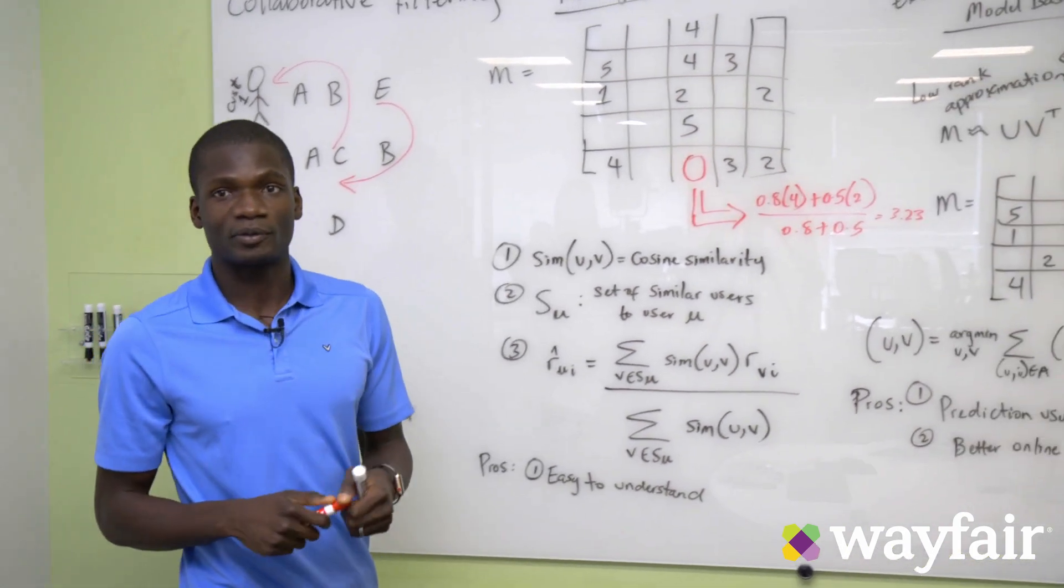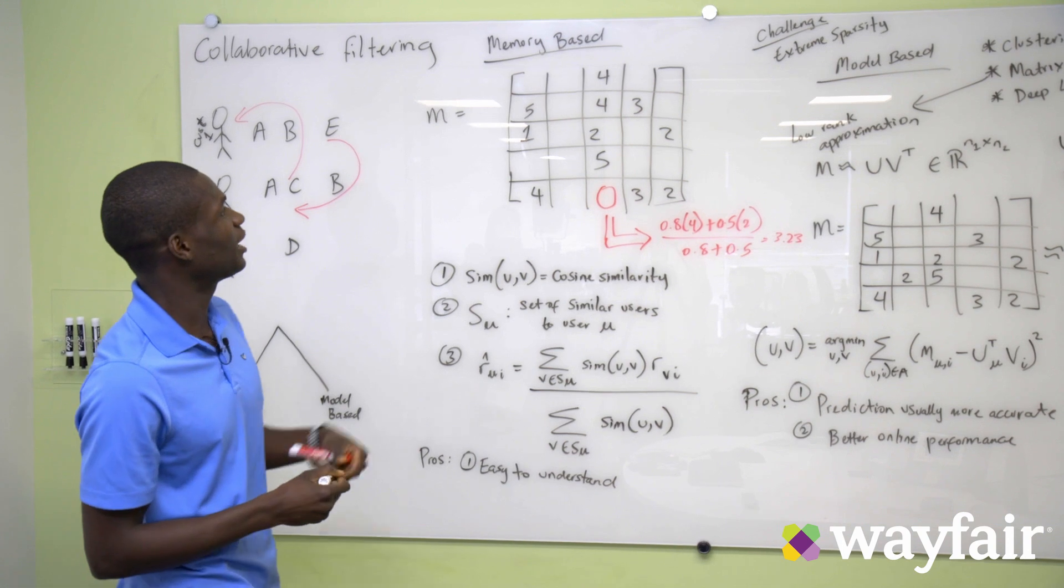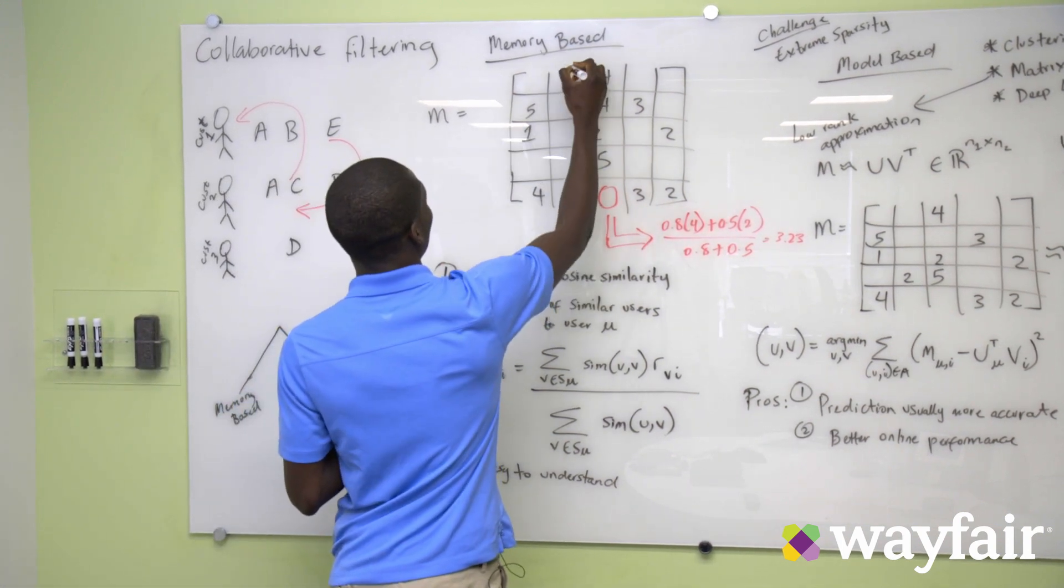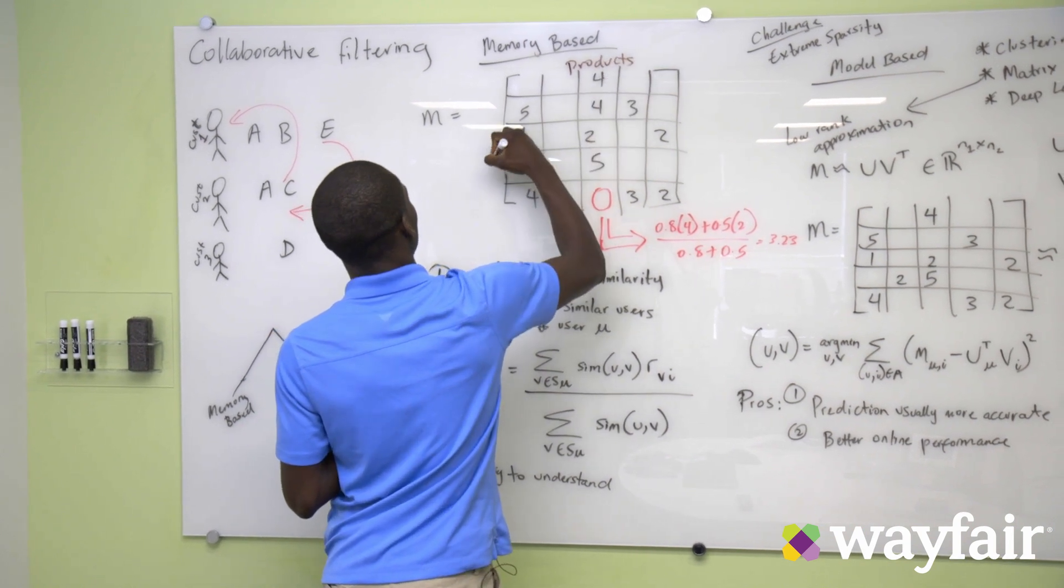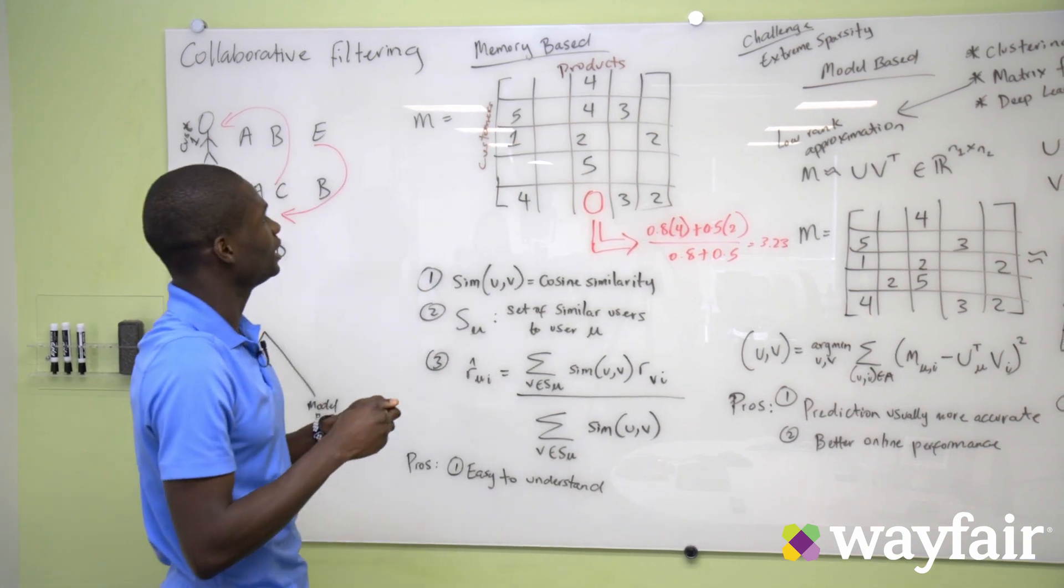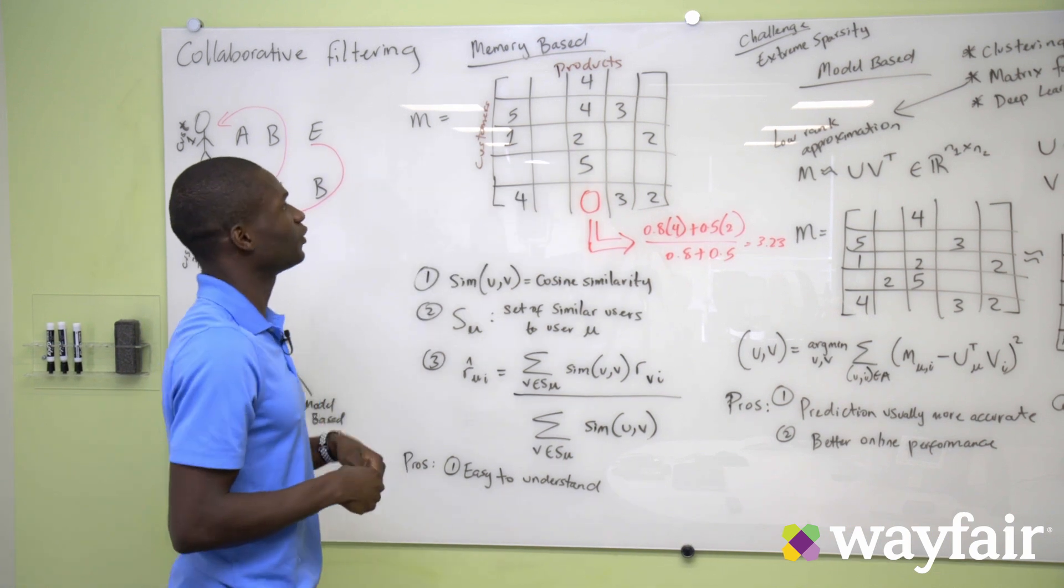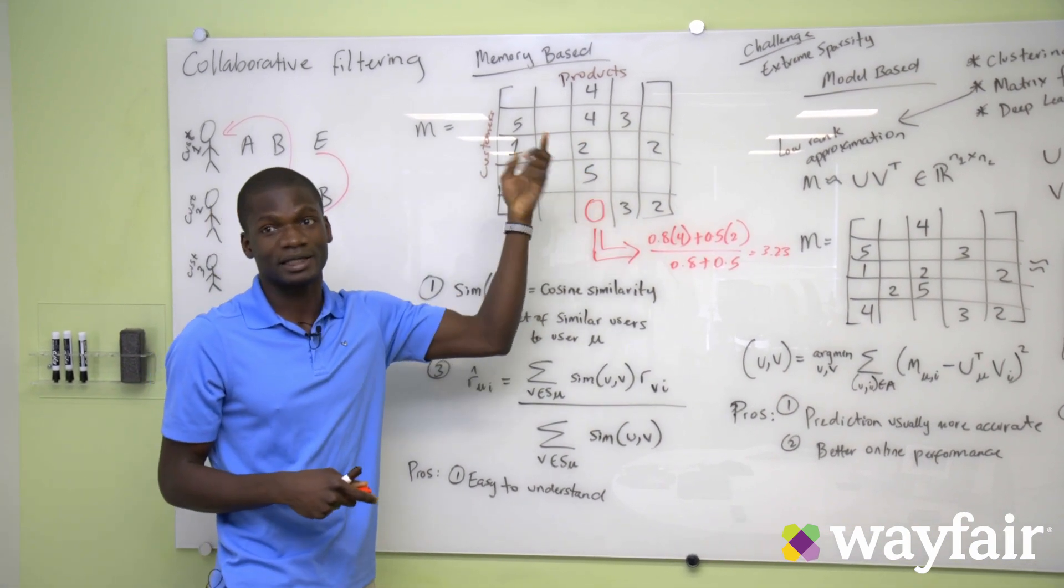In memory-based approach, we usually start off with a matrix M where the columns in this matrix refer to products and the rows refer to customers. And each entry in the matrix refers to the rating that one customer has actually given a product that they have bought.